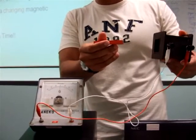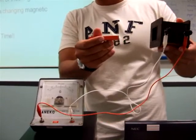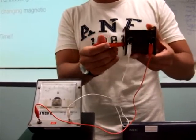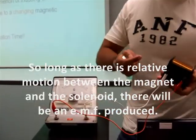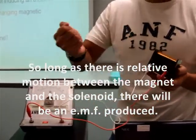So we have to convince the student that if we move the solenoid relative to the magnet, it will also produce a deflection in the galvanometer. So long as there is relative motion between these two, there will be an EMF produced.